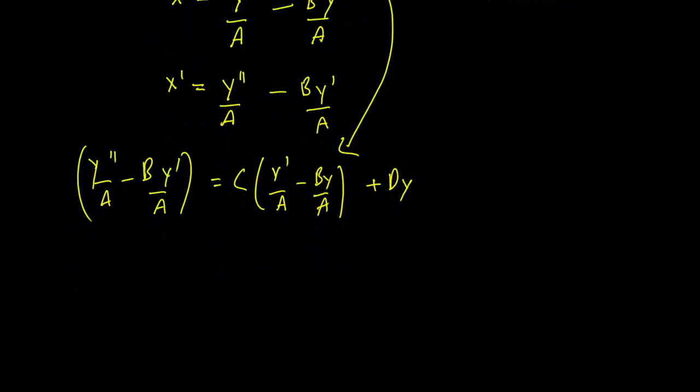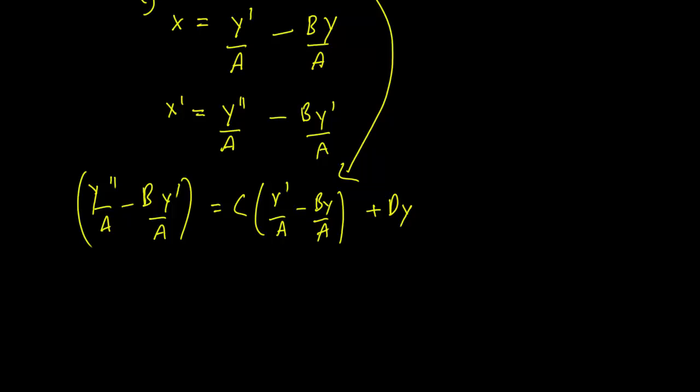Now one thing to observe is that this is now just going to be a second-order linear homogeneous equation. So you can write this down as 1 over a times y'' plus minus b over a